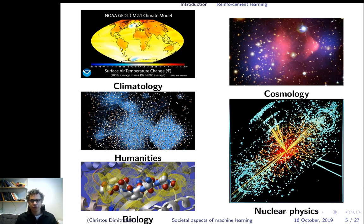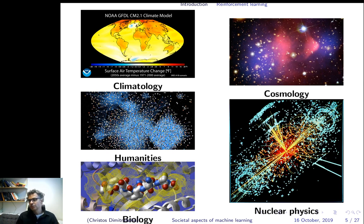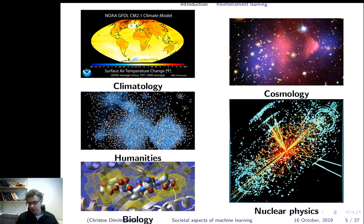Let's take climatology, for example. You have different climate models — each one a very complicated simulator — and you don't know which one is correct. You have measurements from sea buoys, thermometers, and satellite measurements, and you have to use all of them to find the best model. In cosmology, you might use a Gaussian process model to guess where dark matter is in the galaxy. You could also use a graphical model to estimate connections between people — friendships and so on.